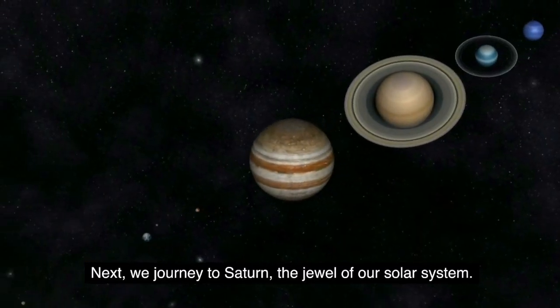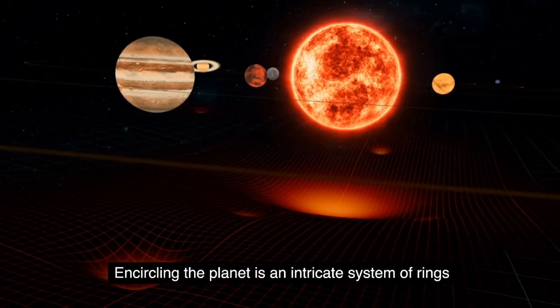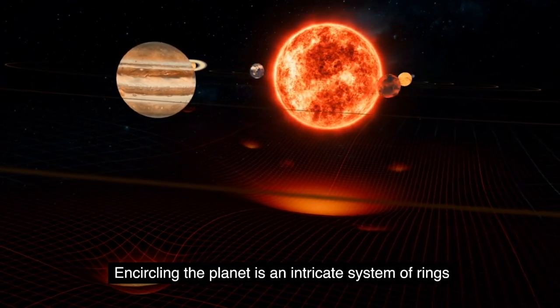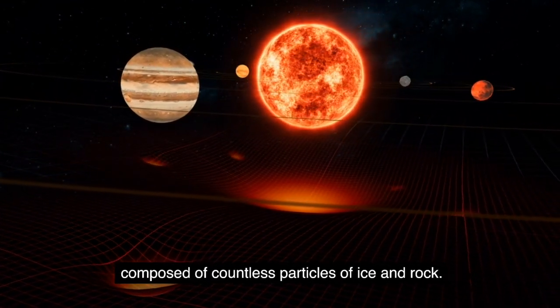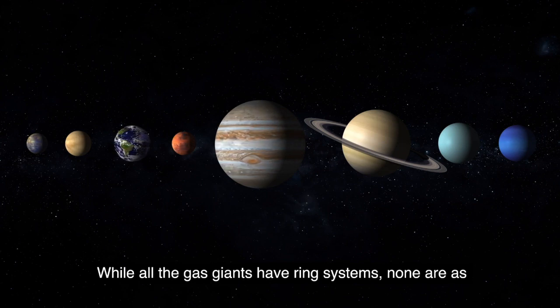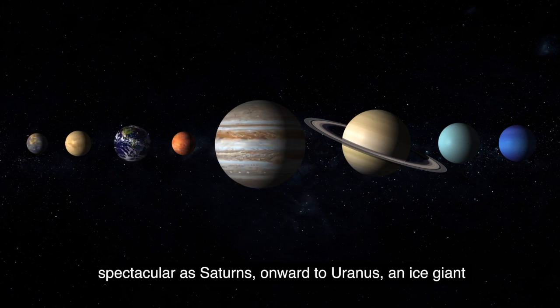Next we journey to Saturn, the jewel of our solar system. Encircling the planet is an intricate system of rings, composed of countless particles of ice and rock. While all the gas giants have ring systems, none are as spectacular as Saturn's.